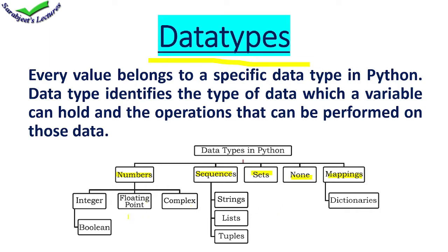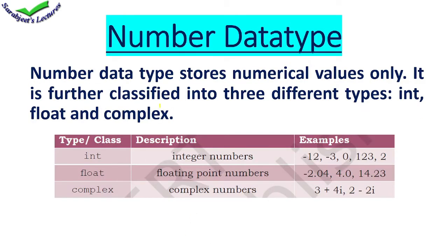First, if we look at numbers, we have three types: integer, floating point, and complex. These are the numerical value types in Python. The first type is int — integer numbers, which are whole numbers and can be positive or negative. Next we have float, which means decimal numbers, and they can also be negative or positive. Complex numbers have an imaginary component, and those complex numbers we can store in Python.